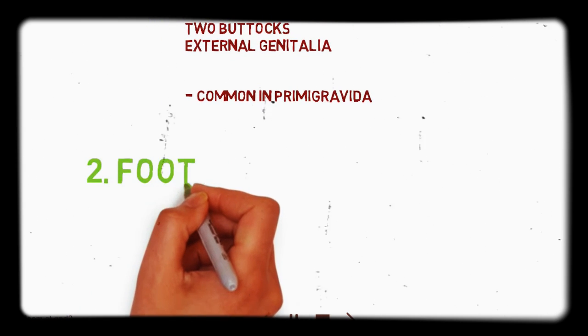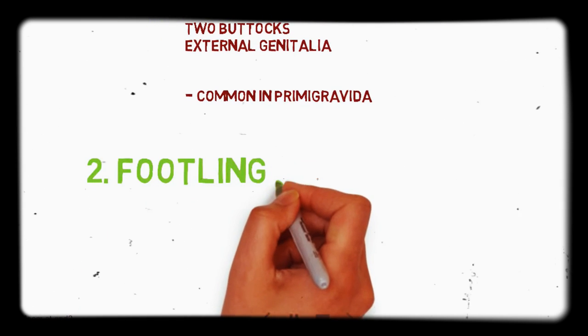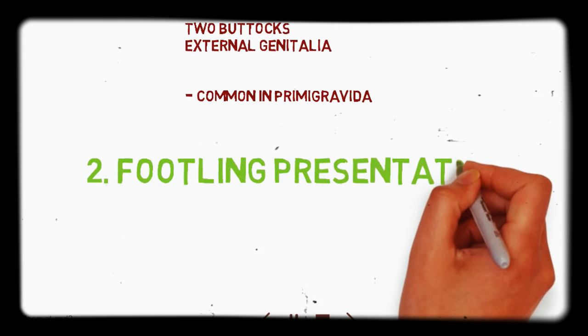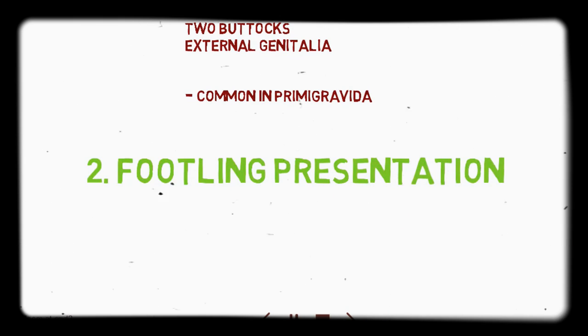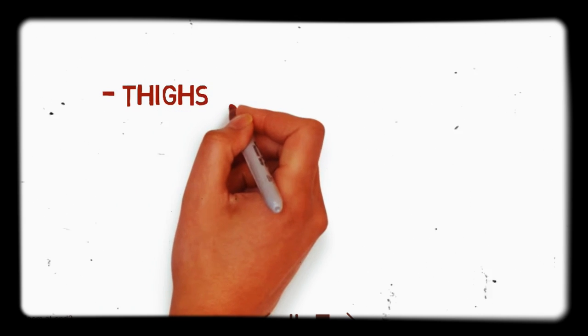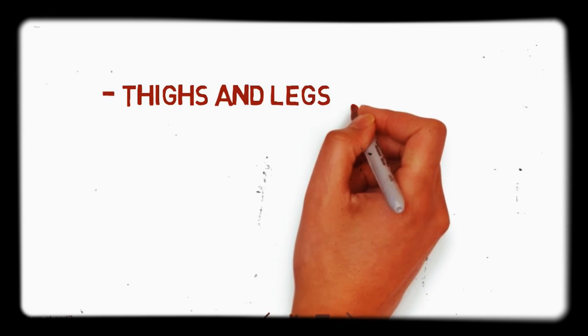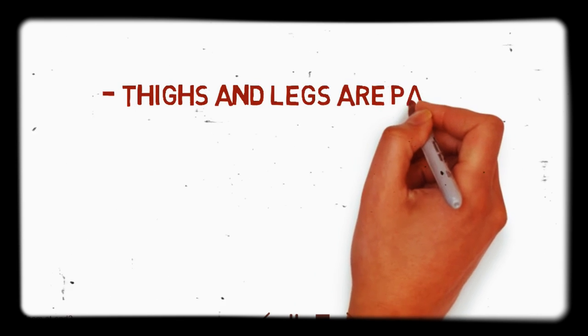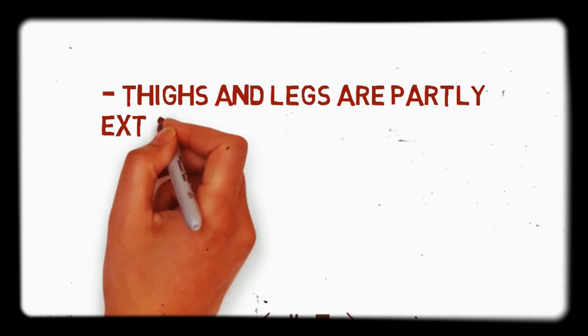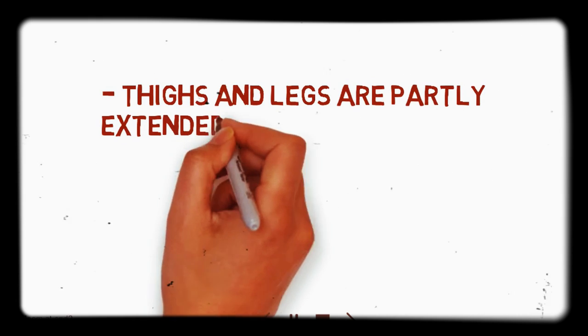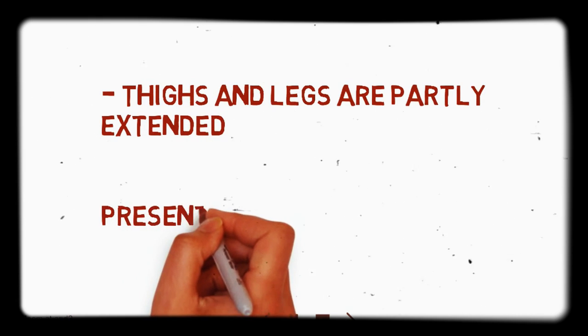Next is the Footling breech. Here, the thigh and legs are partly extended — not completely extended, but partly extended. And the presenting part is the leg. So in Footling breech, the foot and leg are the presenting parts. That is the Footling breech presentation.